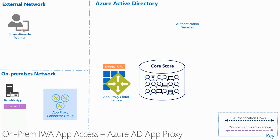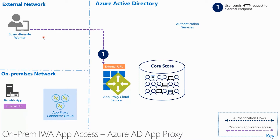With this setup, Susie's browser will first reach out to the Azure AD App Proxy Cloud Service in step one. When the request is received by the cloud service, it needs to determine the underlying application configuration based on the URL sent by the client. In step two, the App Proxy service looks up in Azure AD the application that has the closest match based on the URL hostname and path. In this case, the application is configured to use pre-authentication.